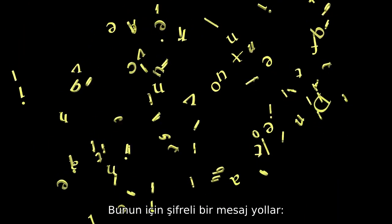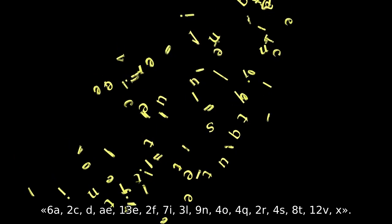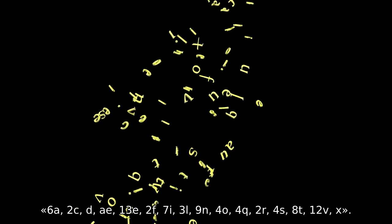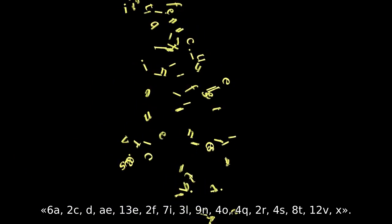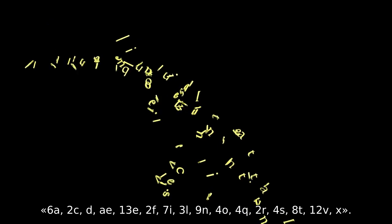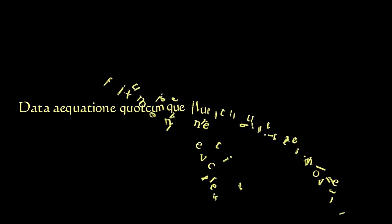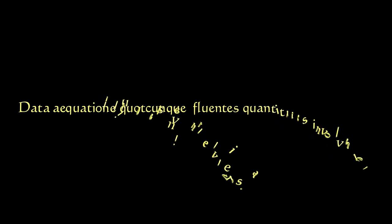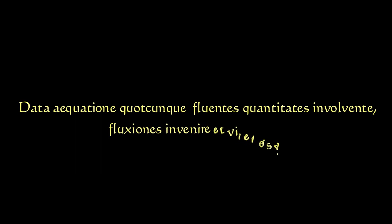So instead, he sends a riddle: 6A, 2C, D, AE, 13E, 2F, 7I, 3L, 9N, 4O, 4Q, 2R, 4S, 8T, 12V, X. Leibniz did not decode this message, but science historians have now decrypted the Latin phrase that was hiding in the anagram.